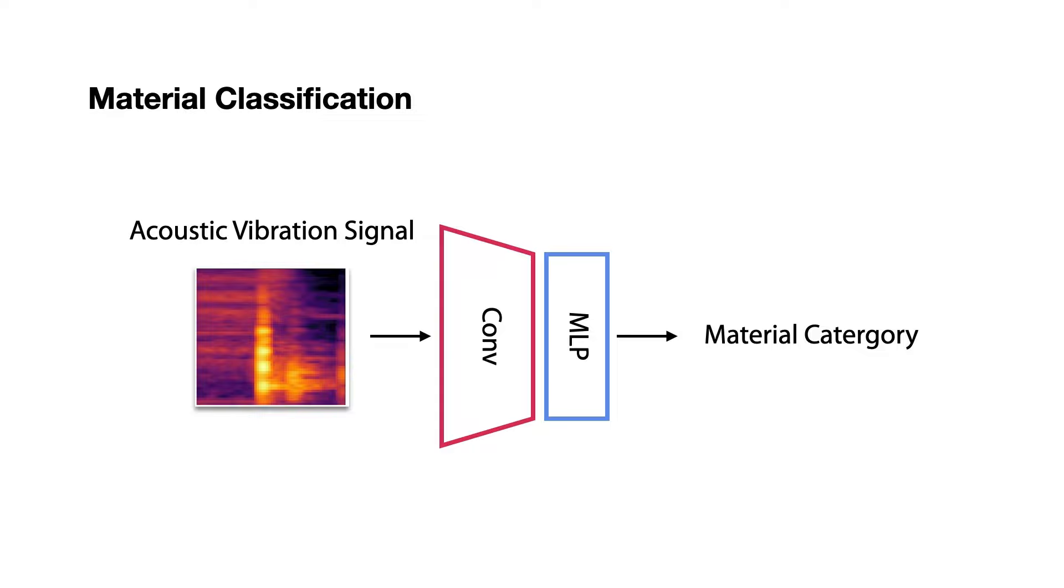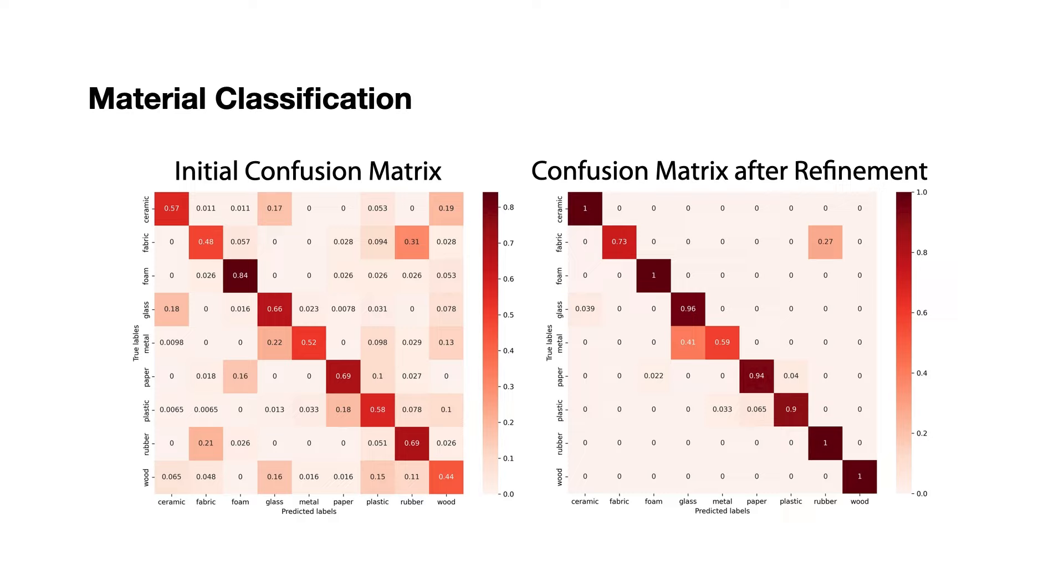We trained a material classification model that takes in the MEL spectrogram of our collected acoustic vibration signal from the impact sound and learns to predict the material label. The network takes the form of three convolutional neural network layers followed by two MLP layers. The initial result of our method leads to a 0.523 F1 score.